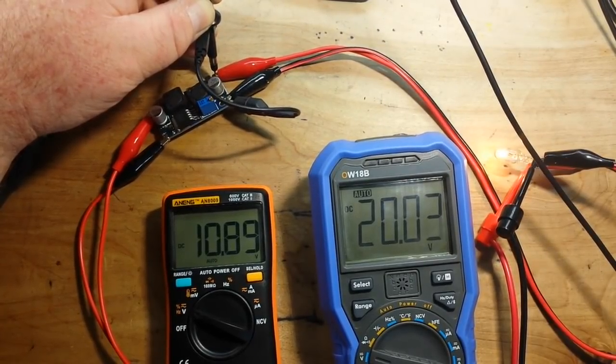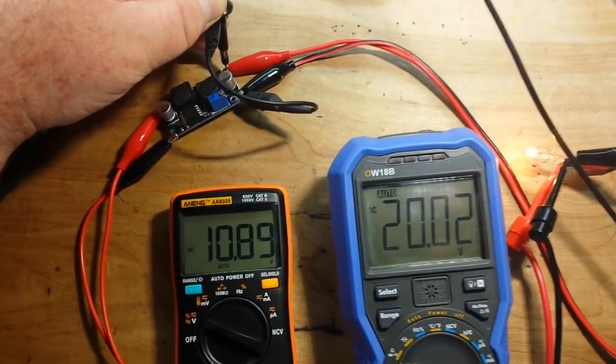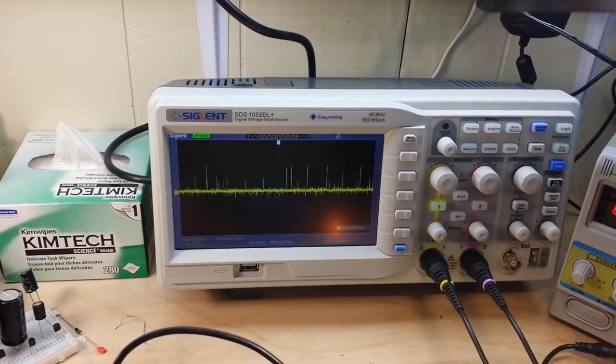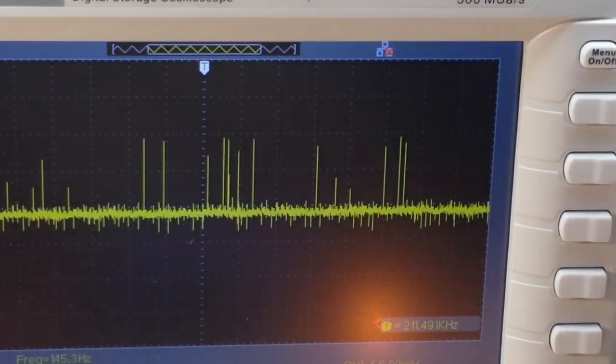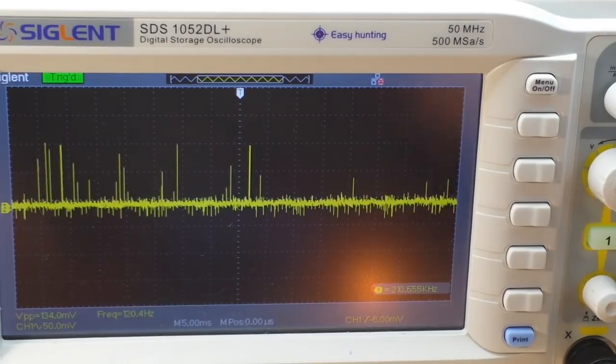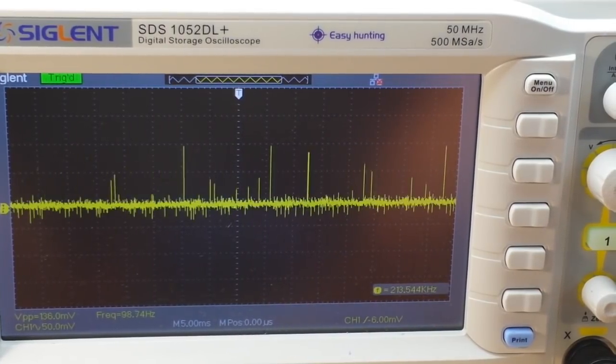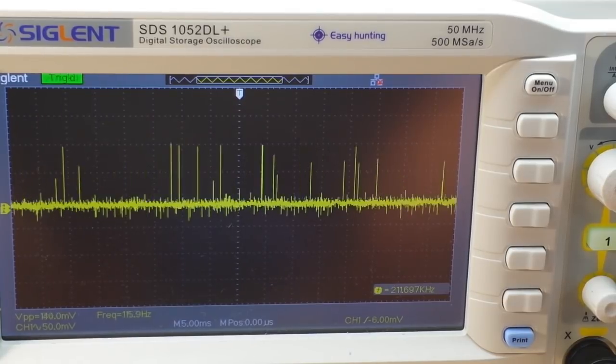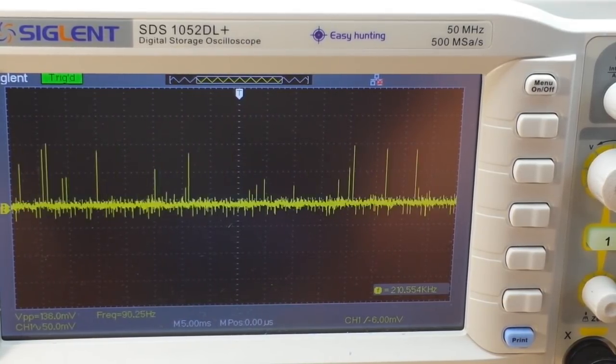Alright, so I'm probing the output on the oscilloscope here. Let's take a look. I will try and zoom in, I don't want to go too much there. The bulb is kind of reflecting back there, but you can see we've got a switching frequency of 212 kilohertz.